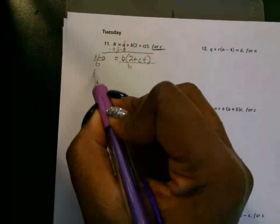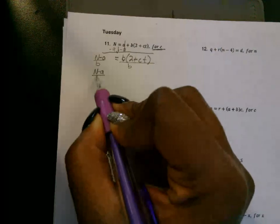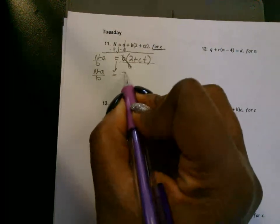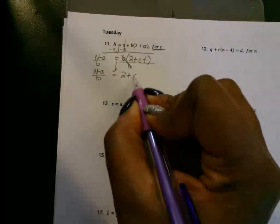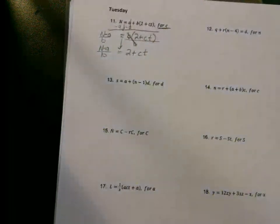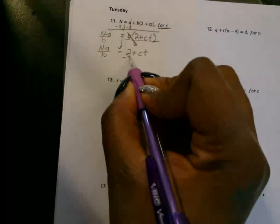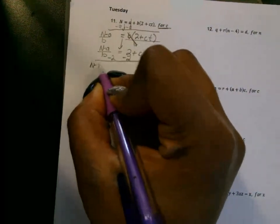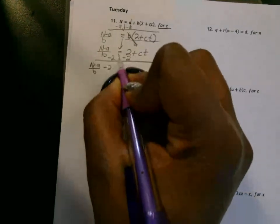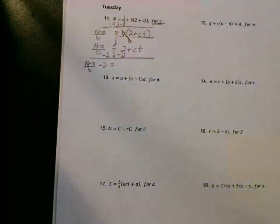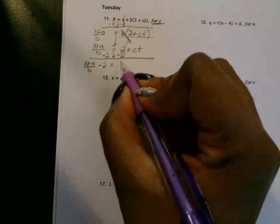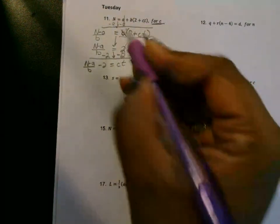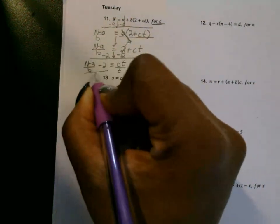Now on this side you get N minus A divided by B. Bring down the equal. Now the B is gone. So now you're left with what's in the parentheses: 2 plus CT. Again, get rid of anything you can add or subtract — subtract 2. So when you subtract 2, this gives you N minus A divided by B, minus 2. Bring down the equal. Now we are left with the T. In order to get rid of the T attached to C by multiplication, you divide both sides by T.